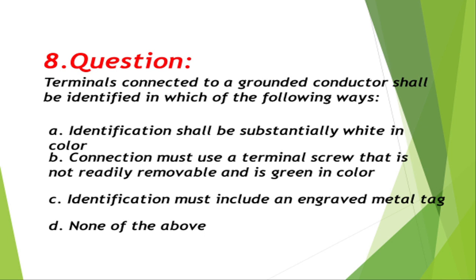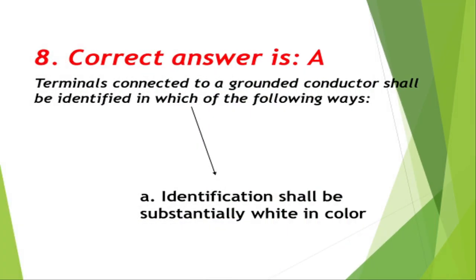Question number 8: Terminals connected to a grounded conductor shall be identified in which of the following ways? A. Identification shall be substantially white in color, B. Connection must use a terminal screw that is not readily removable and is green in color, C. Identification must include an engraved metal tag, D. None of the above. Correct answer is A, identification shall be substantially white in color.